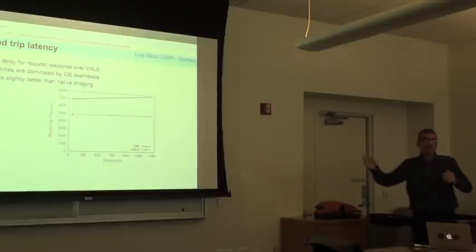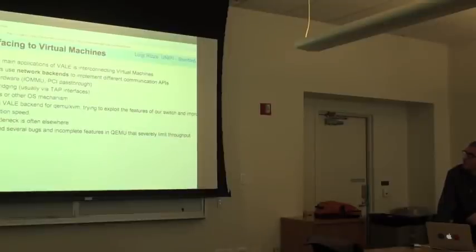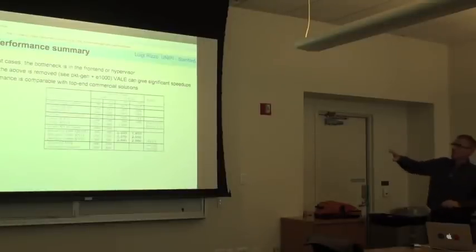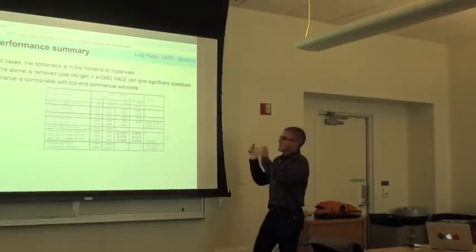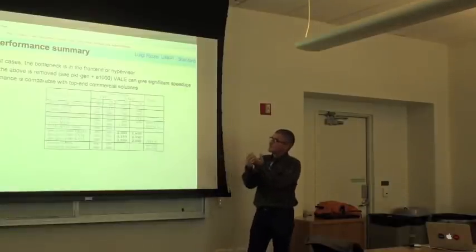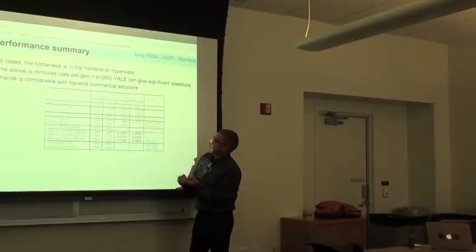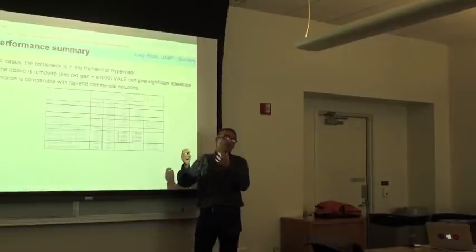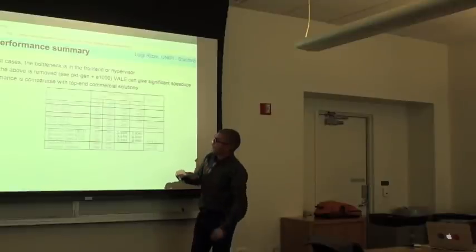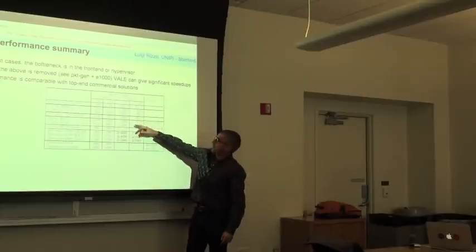A question from the audience: from the breakdown of time in the traditional FreeBSD stack, you're only working with the lower layers — removing the IP header processing and the socket layer. How much did you reduce the total cost? And based on this architecture, would you do things in the upper layers differently?